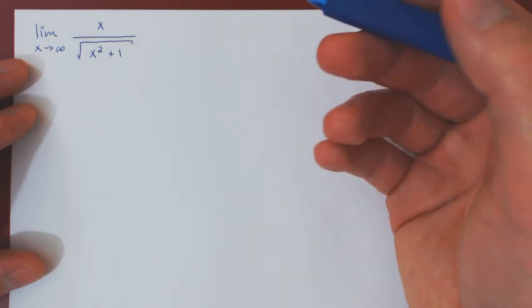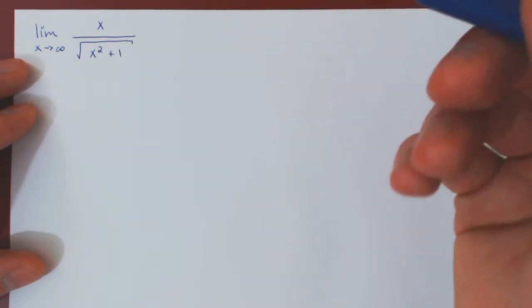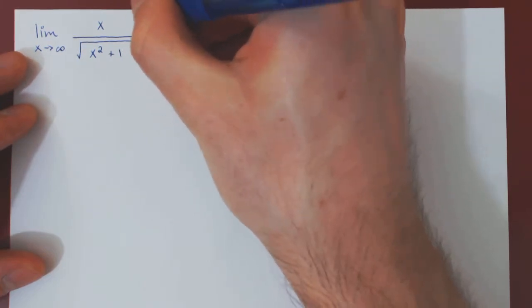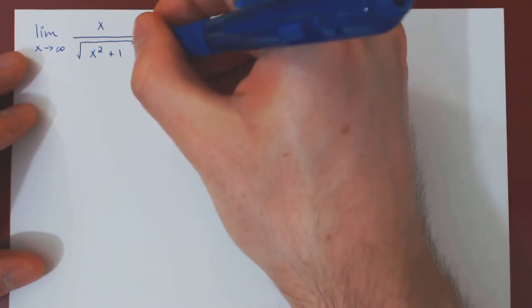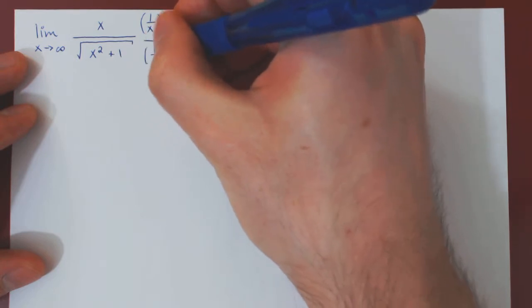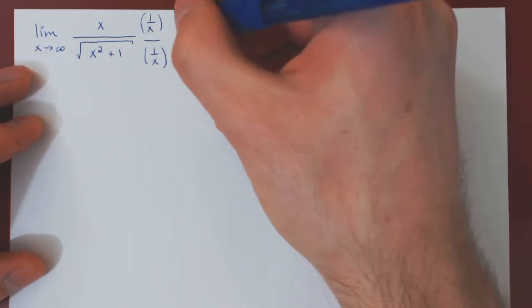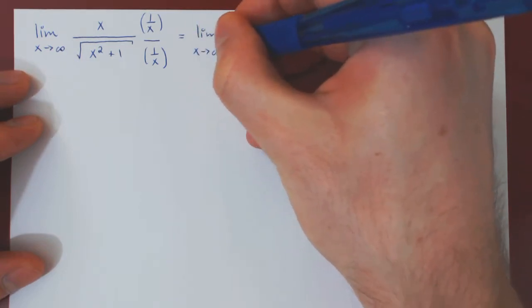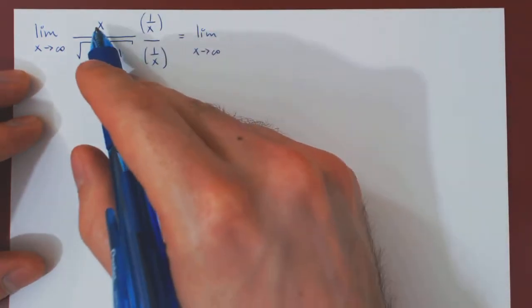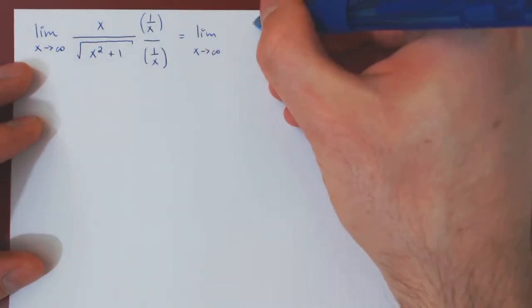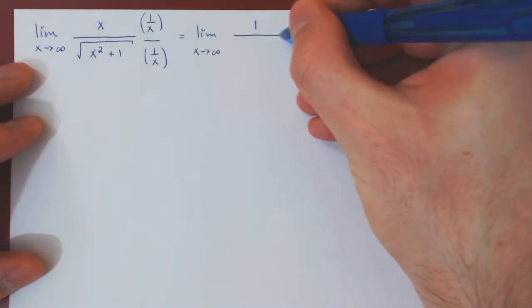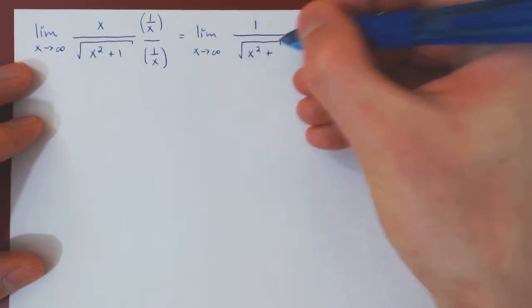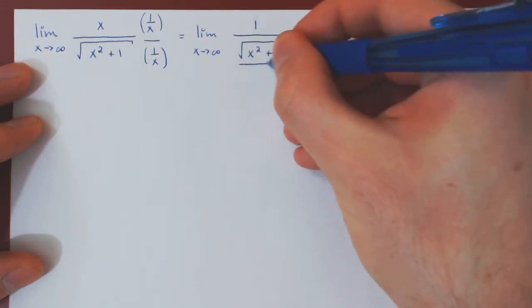The idea is simply to divide top and bottom by the dominant term, which here is x. So we do times one over x on the numerator, over one over x on the denominator. The numerator becomes x over x, which is one, over the root of x squared plus one, over x.